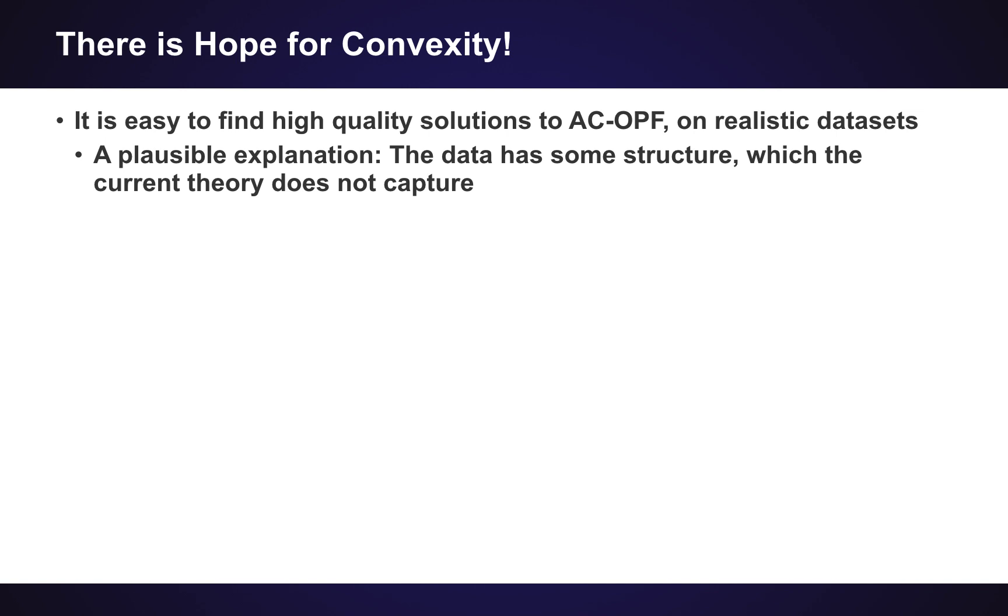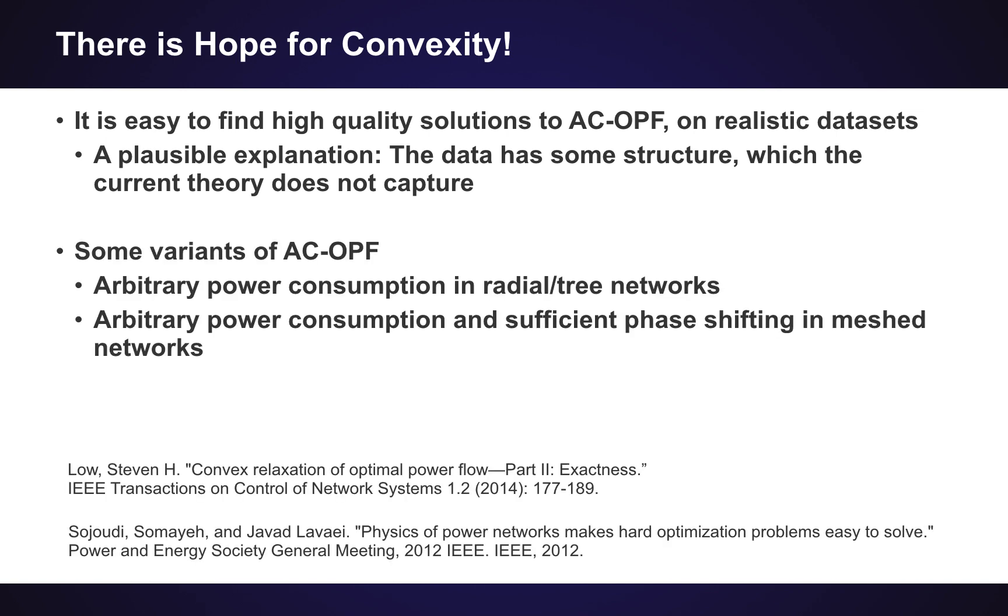So what you're saying is that the realistic type of input data might actually make it easy. Yes, definitely. It might make it much easier than these worst case bounds that have been shown in the literature. And I would say that it's fairly easy to observe that empirically. You can run it on hundreds of test cases and show it's easy to get a high quality solution. But proving it for some particular class of general inputs is extremely difficult.